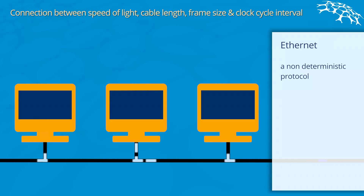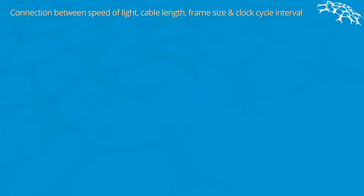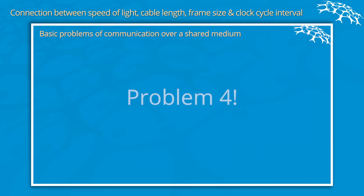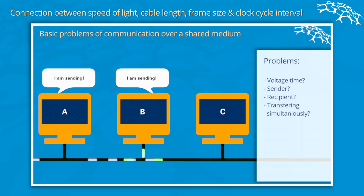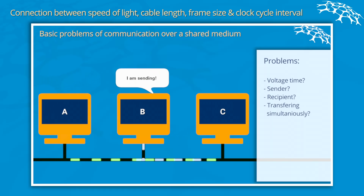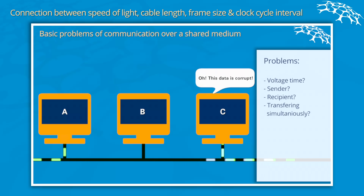What could happen is that a collision could occur. A big problem is who is actually supposed to use the medium. So if A starts to transfer some data, at some point in time B might also decide it wants to use the medium and transfer some data. Now what happens is that C receives corrupted data because it receives the data from both A and B.